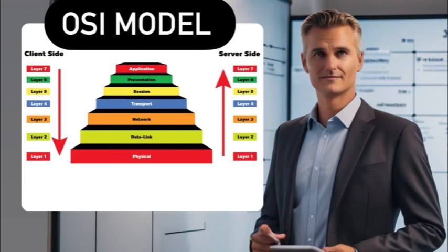A network is a group of computers, printers, or any other devices that share data with each other. There are various types of networks: LAN (Local Area Network), WAN (Wide Area Network), VPN (Virtual Private Network), SAN (Satellite Area Network), PAN (Personal Area Network), and many more.